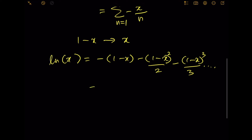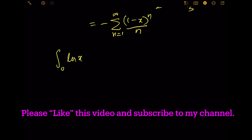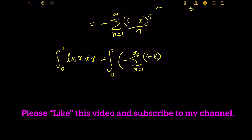This gives the equation: negative sum from n equals 1 to infinity of (1 minus x) to the power n over n. Therefore, the integral of ln(x) from 0 to 1 equals the integral from 0 to 1 of negative sum from n equals 1 to infinity of (1 minus x) to the power n over n dx.